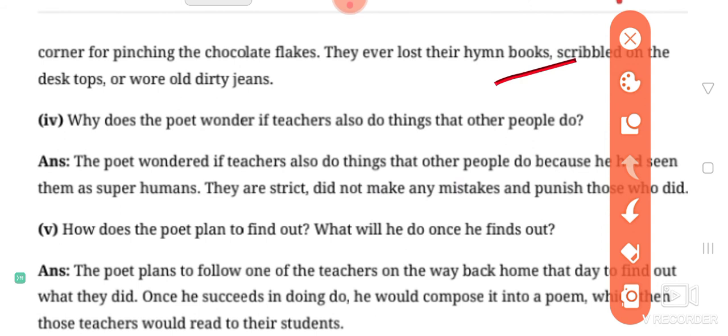Fourth number: Why does the poet wonder if teachers also do things that other people do? Because he had seen them as superhuman. They are strict, did not make any mistakes, and punish those who did.